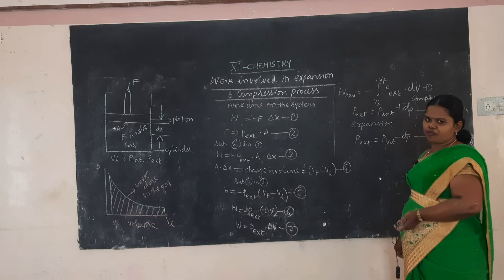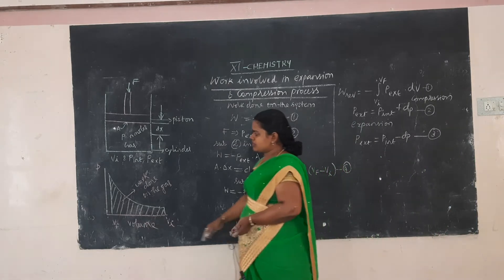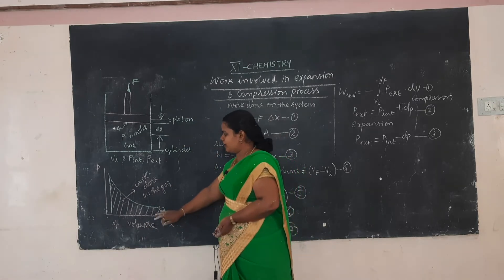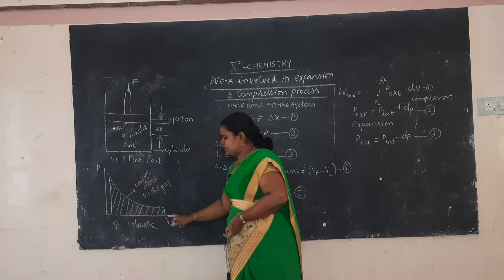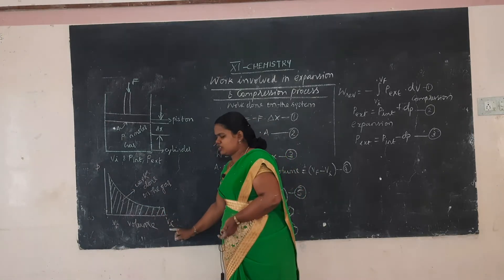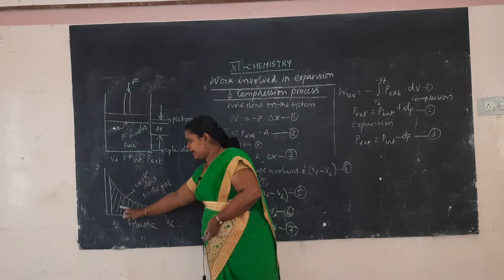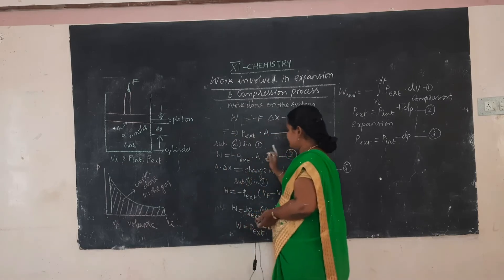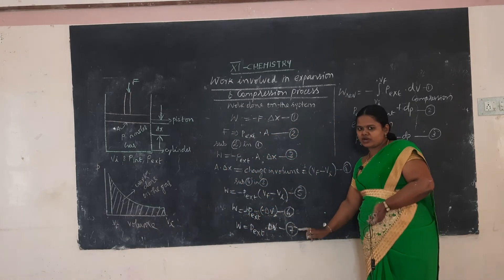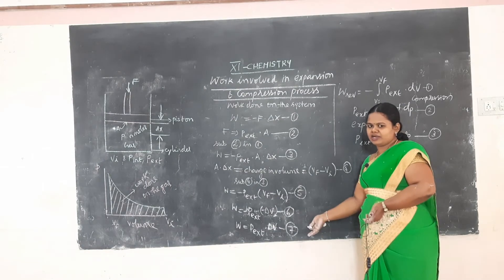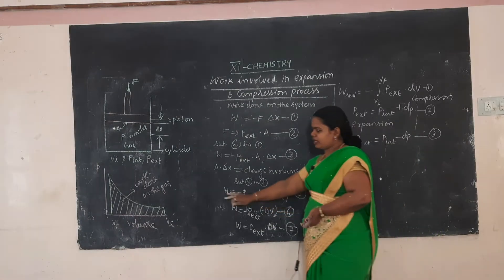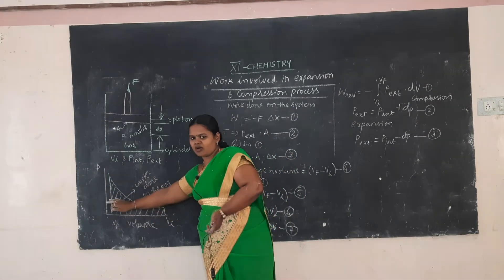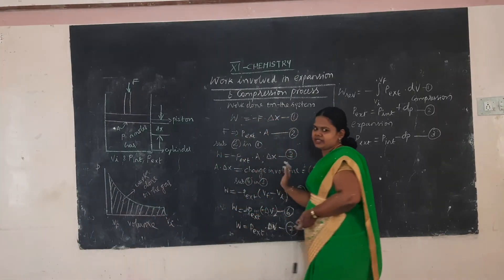We can plot a P-V graph with pressure on the Y-axis and volume on the X-axis. You can see a steep decrease in volume from initial to final. The shaded area shows that work is done on the system. Since work is done on the system, the sign convention is positive.